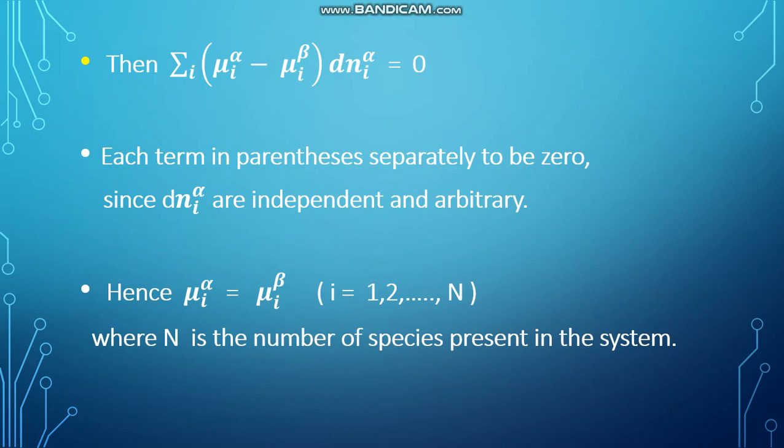Each term in the parentheses separately must be zero since dnᵢ^α are independent and arbitrary. Hence we can write the above equation as μᵢ^α = μᵢ^β where i = 1, 2, and so on to N. N is the number of species present in the system.